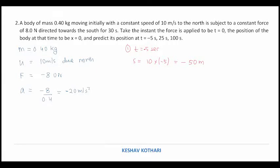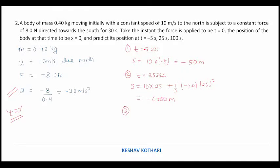At t = 25 seconds, the acceleration comes into existence at t = 0; before this the body moved with uniform velocity. With a negative acceleration, displacement s = 10(25) + ½(−20)(25²) = 250 − 6250 = −6000 m.